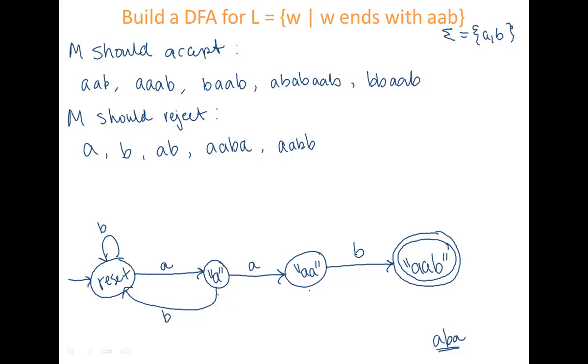So for example, this string up here, this machine right now would accept that string. I'd move from reset to A to AA to AAB when reading that string.